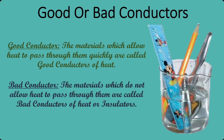The materials which do not allow heat to pass through them are called bad conductors of heat or insulators. Paper, wood, leather, clothes, mud, rubber, plastics, glass, etc. are bad conductors of heat or insulators. Air and distilled water are also bad conductors of heat. Most liquids and gases are also bad conductors of heat.